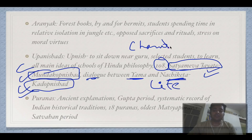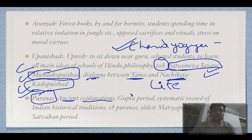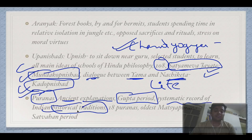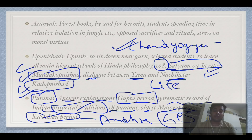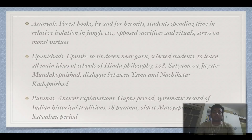Puranas literally means 'ancient explanations'. They were written during the Gupta period and are a systematic record of Indian historical traditions. There are 18 Puranas. The oldest is the Matsya Purana, written during the Satavahana period — they were Andhra kings. Gautamiputra Satakarni was the most famous king of the Satavahana period.